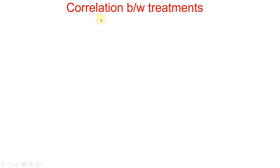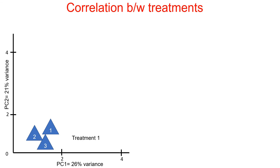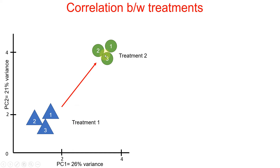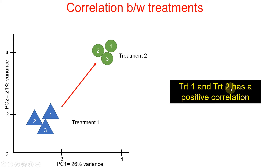Now let's try to understand how PCA can help us understand the correlation between treatments. Here is another treatment with three samples. You can see all the samples of this treatment have almost the same X value and same Y value. Here is another treatment — it also has a high X value and high Y value. So if we try to plot a trend between these two treatments, you can see it is showing a positive correlation, meaning treatment one and treatment two have a positive correlation.